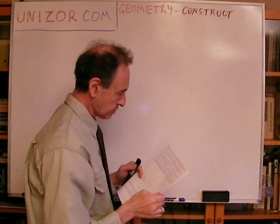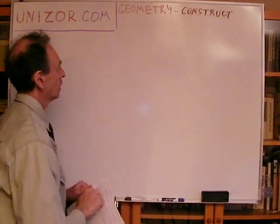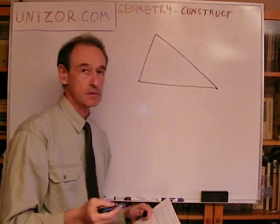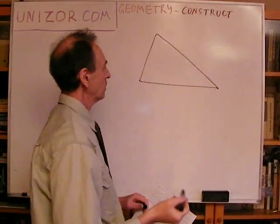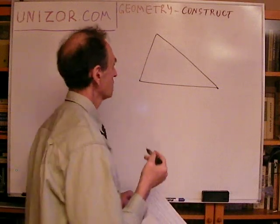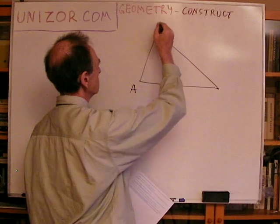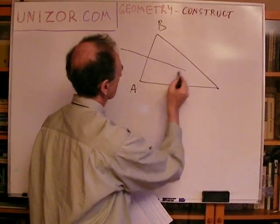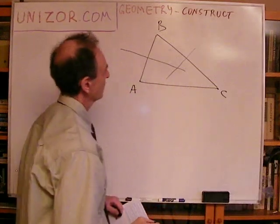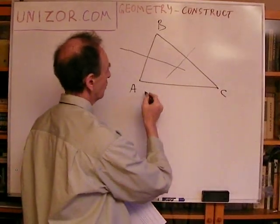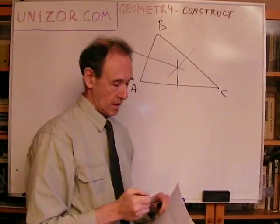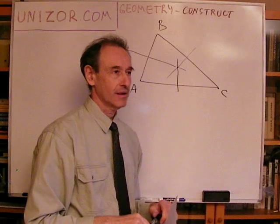Construct a point equidistant from the three vertices of a given triangle. If you have a triangle, you need a point equidistant from all three vertices. Using the locus approach: the locus of points equidistant from A and B is one perpendicular bisector line; the locus equidistant from B and C is another; and equidistant from A and C is a third. These three lines cross in one point — but this needs some comment, since in theory three lines could cross pairwise in different points.